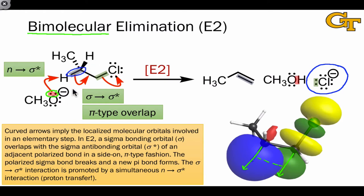This n to sigma star interaction promotes the elimination step by activating the electrons in this sigma bond towards donation into a new pi bond. A key point about bimolecular elimination is that it requires this sigma to sigma star orbital overlap in order to occur.